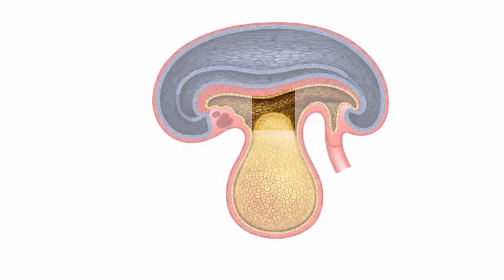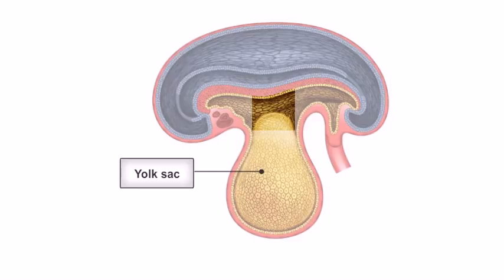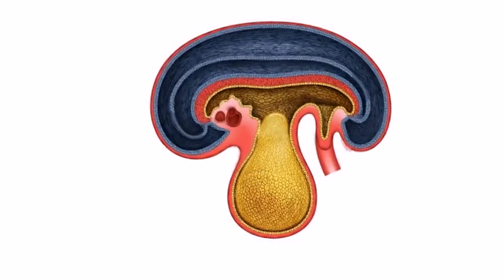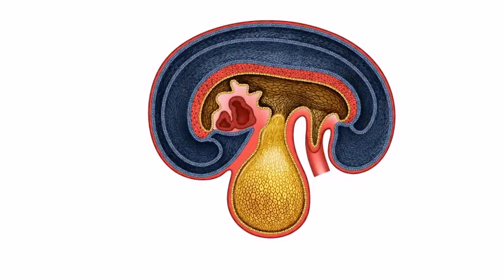The midgut lies between the fore and hindgut and remains connected to the yolk sac until the fifth week of development. As embryonic folding continues, the connection to the yolk sac narrows into a stalk known as the vitelin duct.